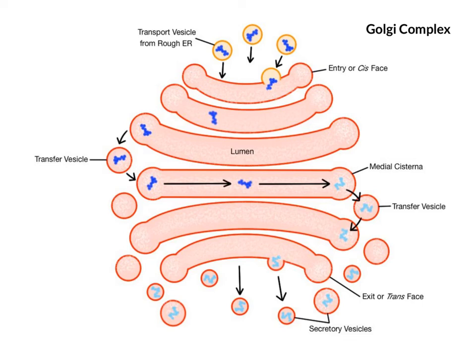The vesicle membranes fuse with the Golgi membrane and the cisterns then modify and process the protein, putting it into its functional shape.